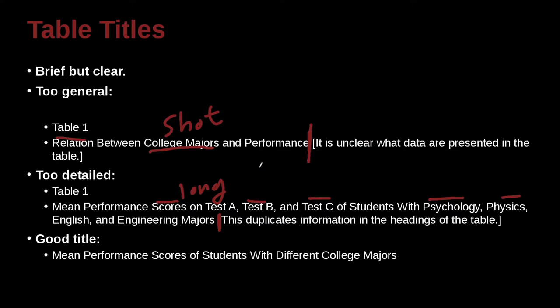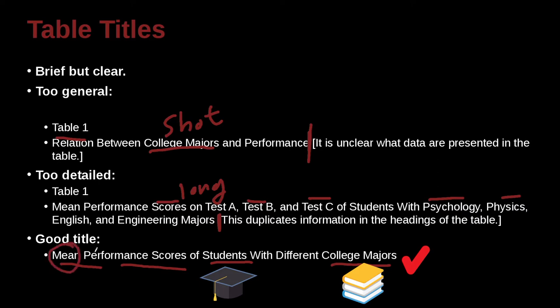A good compromise would be in the middle something like this. Mean performance scores of students with different college majors. So we do mention majors, but we don't say what the majors are. We do say that it's measuring the mean and the performance scores of the subjects who are students. So this is a good title for a table, because this table is going to show me the students. The variables are going to be the performance scores. The numbers inside of here are going to be the means, and the subgroups are going to be the college majors.